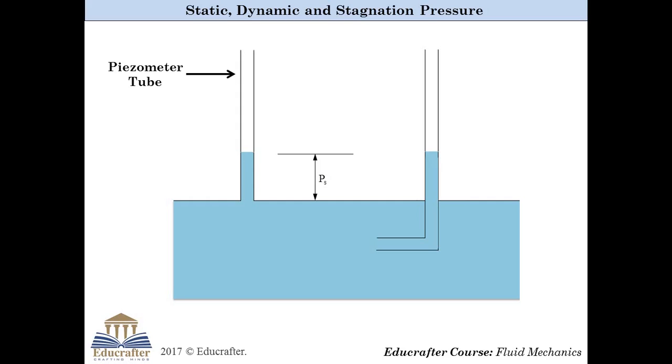And now consider a small tube inserted into the flow pointing upstream is called pitot tube. In each tube, the level of fluid indicates the intensity of pressure. The level of fluid in piezometer and pitot tube is same. Now, let us open gate from both the sides.